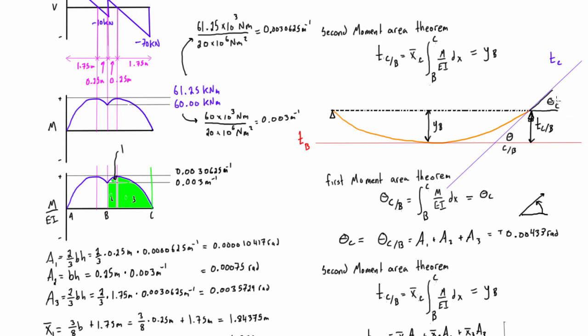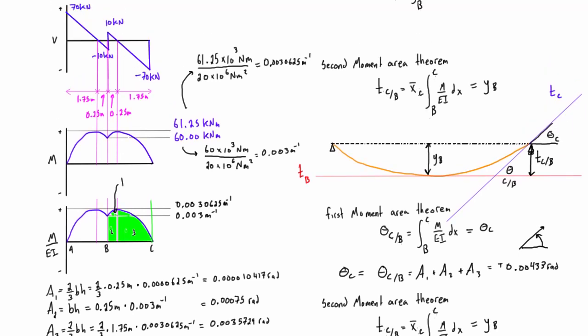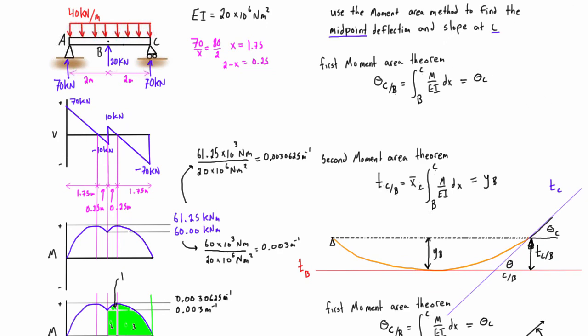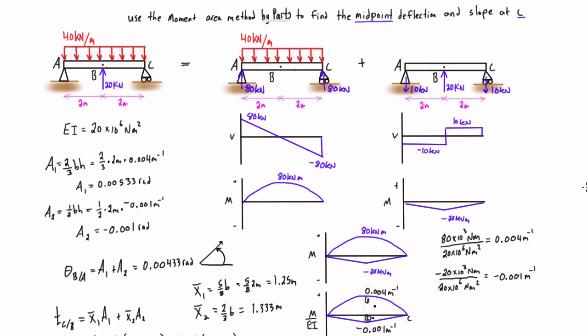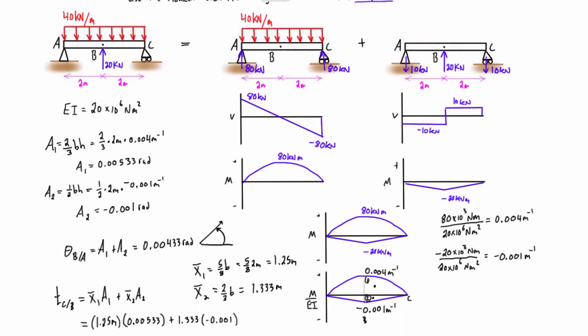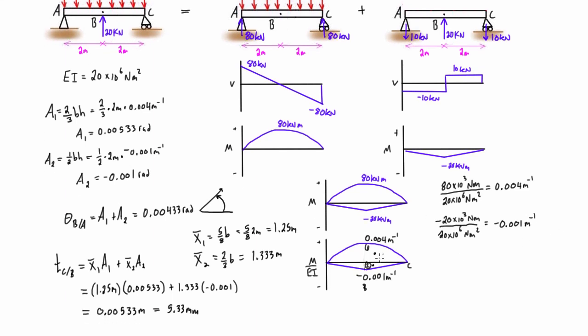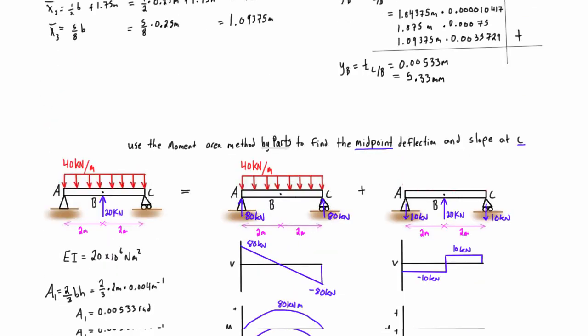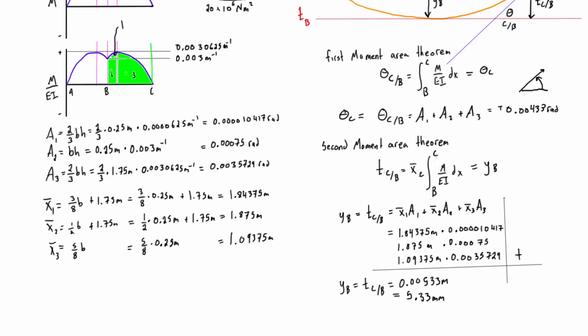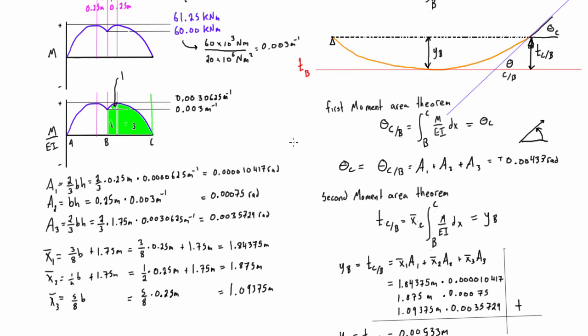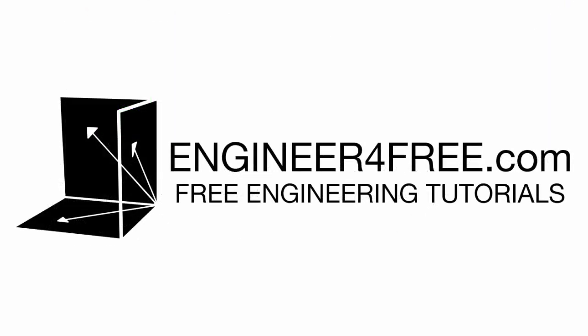All right guys, so there you go. That's one example solved with the regular moment area method and then solved again with the moment area method by parts. So you can see, often with moment area method by parts, typically the math is easier with these ones. Like the centroids, the distances from centroids to the point that we're taking the measurements from is typically easier, compared to in here we were having to, you know, it was a little bit more work. But it depends on the problem. It's not always easier to do by parts, but now you know how to do both, and so it's up to you to decide which one you want to use. And yeah, I'll see you guys in the next video.